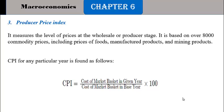In the producer price index, you will have 8,000 commodities, including goods, manufactured and mining products — the products that wholesalers and producers are buying or purchasing. We call this the producer price index.